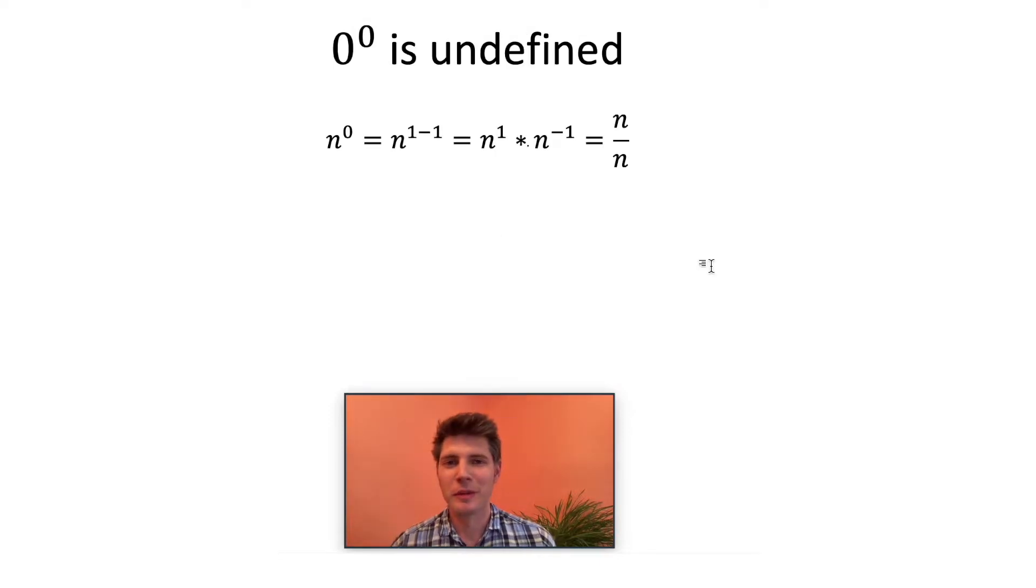It's the same thought process. For the people who said zero to zero is undefined, this is the reason why they said it. They used algebraic manipulation and came up with something. And I don't mean manipulation in a bad way, it's fine. These algebraic rules are great. n to the zero equals n to the one minus one, which is the same thing as n to the one times n to the negative one, which is n over n.